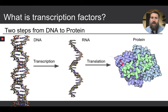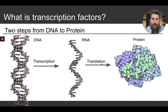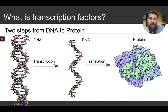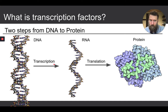DNA gets transcribed into RNA via RNA polymerase. We call it messenger RNA because it carries a message from DNA to cellular machinery — the message being: make this protein, make this estrogen receptor. Translation is the last step. So we're concerned with transcription here because our SRY gene codes for a protein that is a transcription factor, meaning it has something to do with this process.